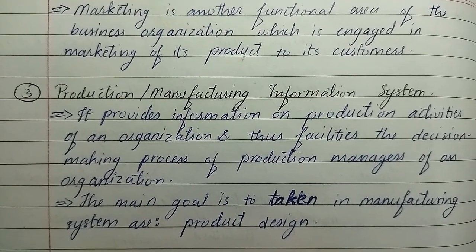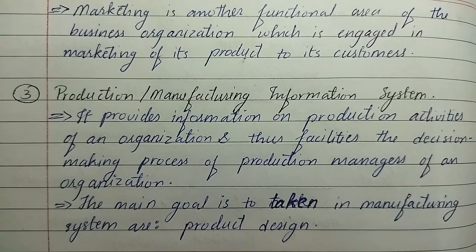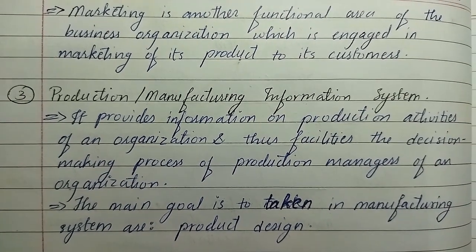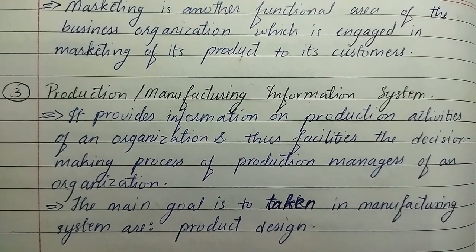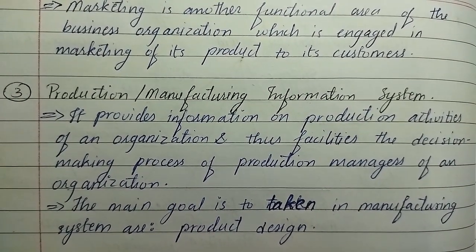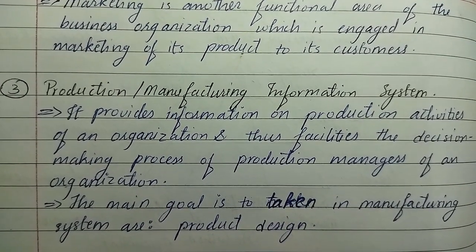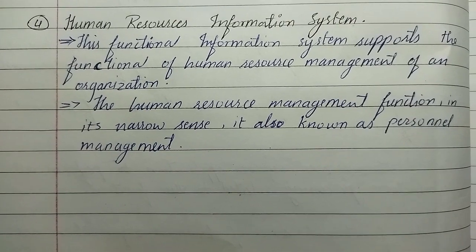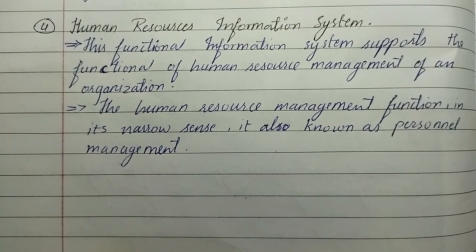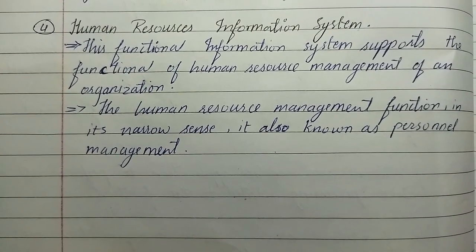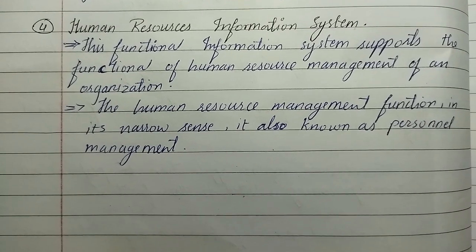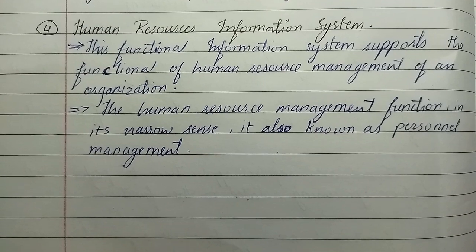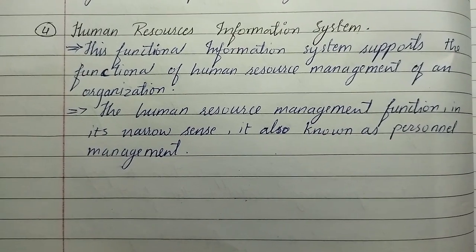The third type is the production or manufacturing information system. It provides information on production activities of an organization and facilitates the decision-making process of production managers. The main goal is to support the manufacturing system and product design. The fourth type is the human resource information system. This functional information system supports the functions of human resource management of an organization, also known in its narrow sense as personnel management.